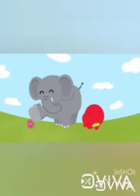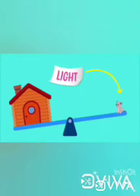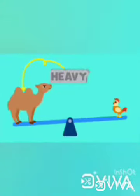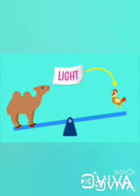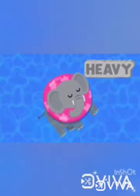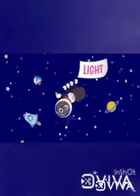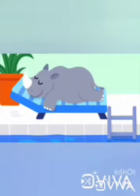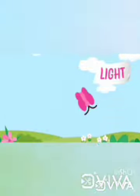A house — Heavy. A mouse — It's light! A camel — Heavy. A chick — It's light! It's heavy like an elephant, just floating on an inner tube. Or light like an ant in outer space, just drifting through the blue. It's heavy like a rhino just hanging out by the pool. It's light like a butterfly floating by, singing hoo-hoo-dee-hoo.